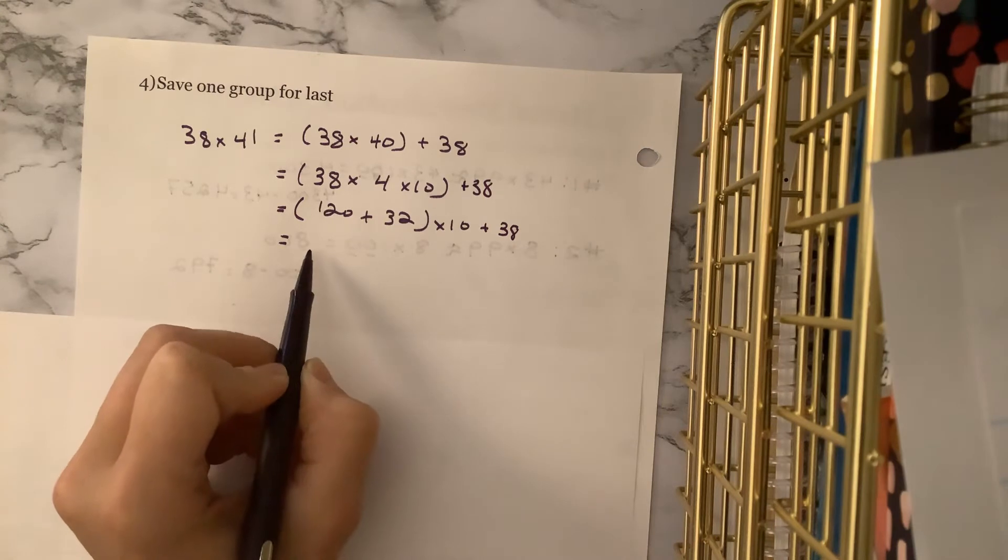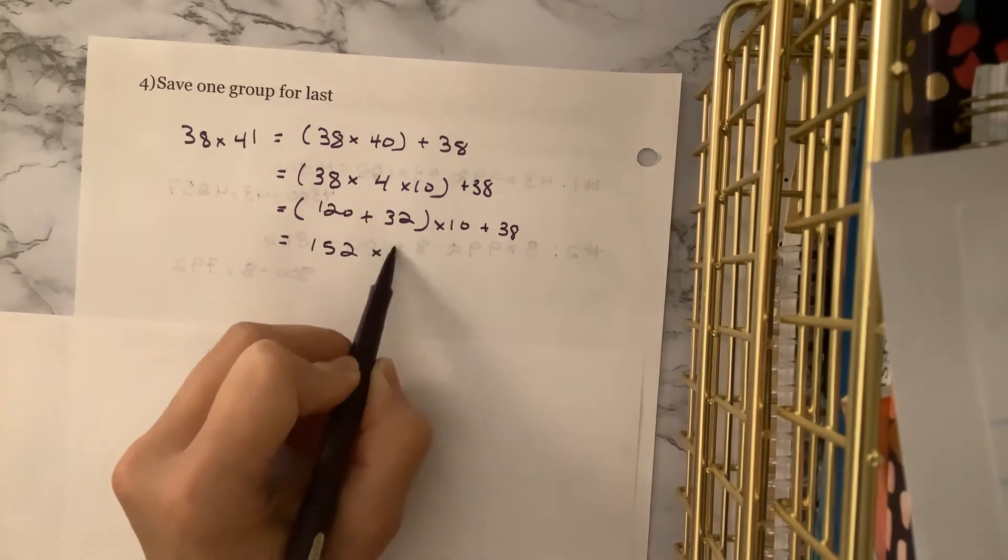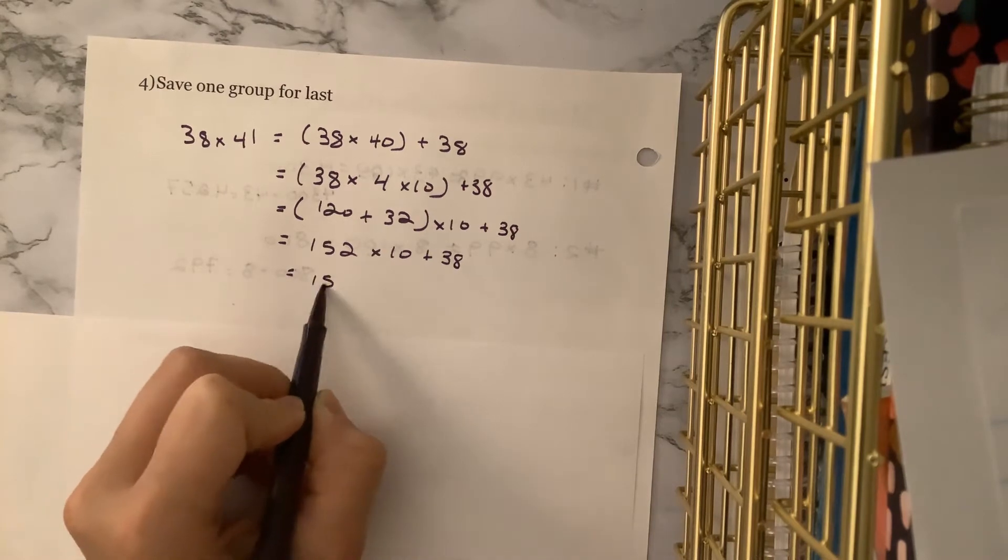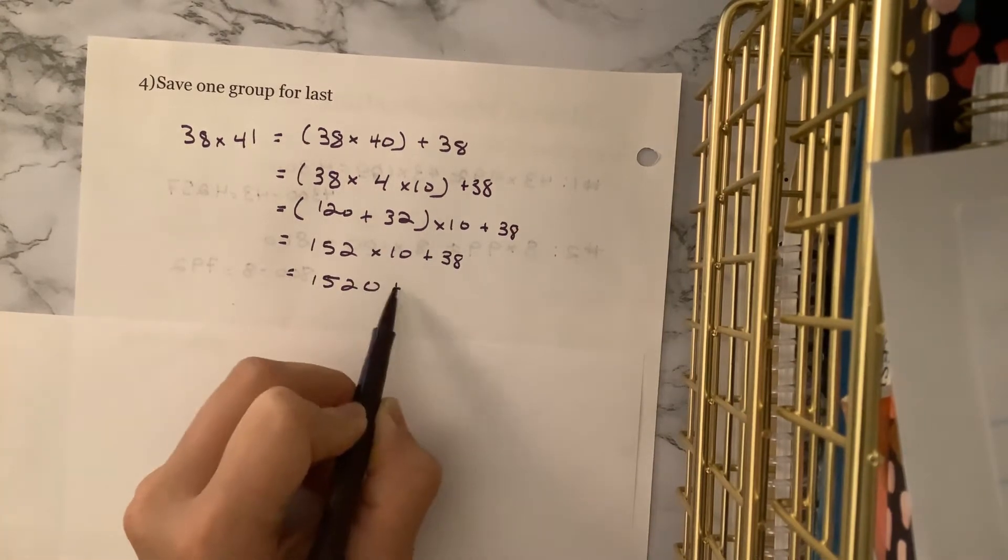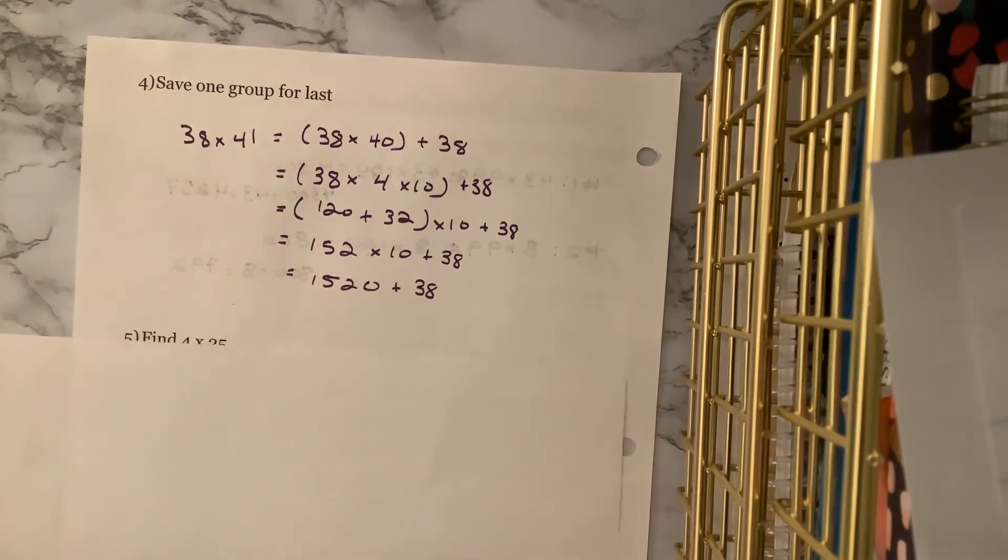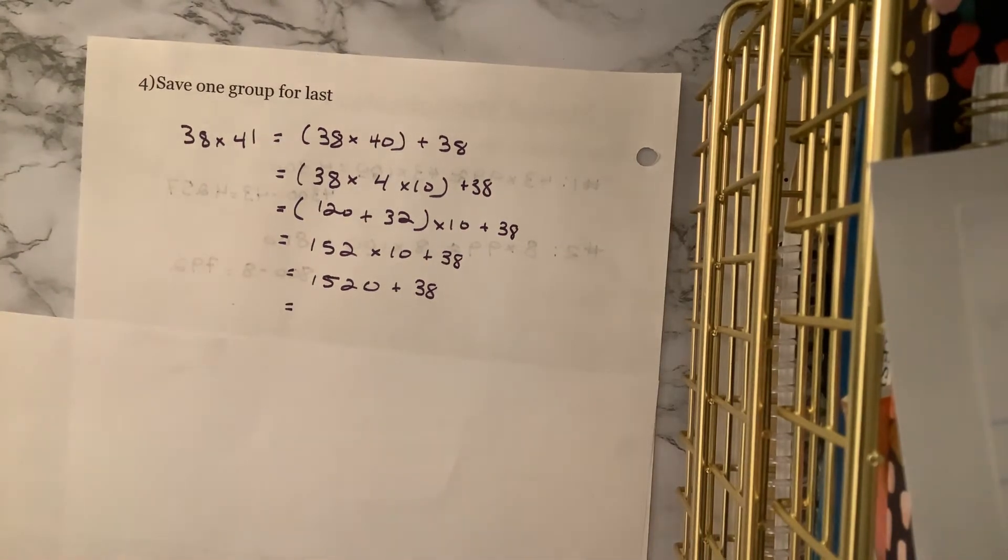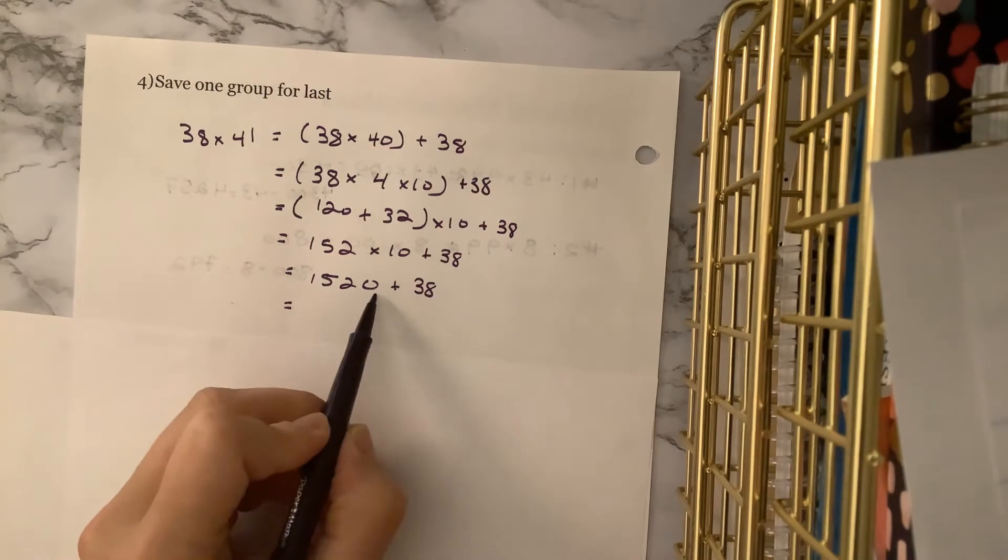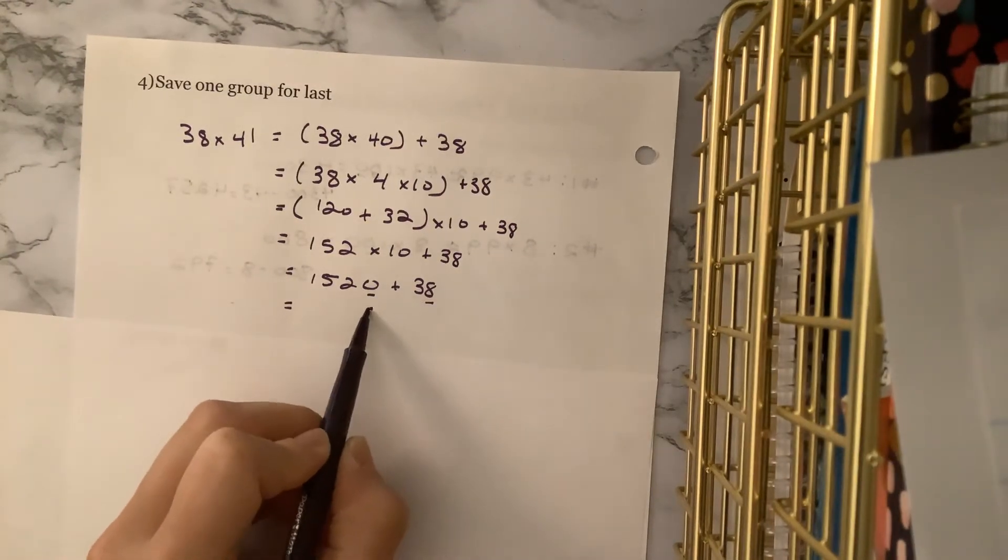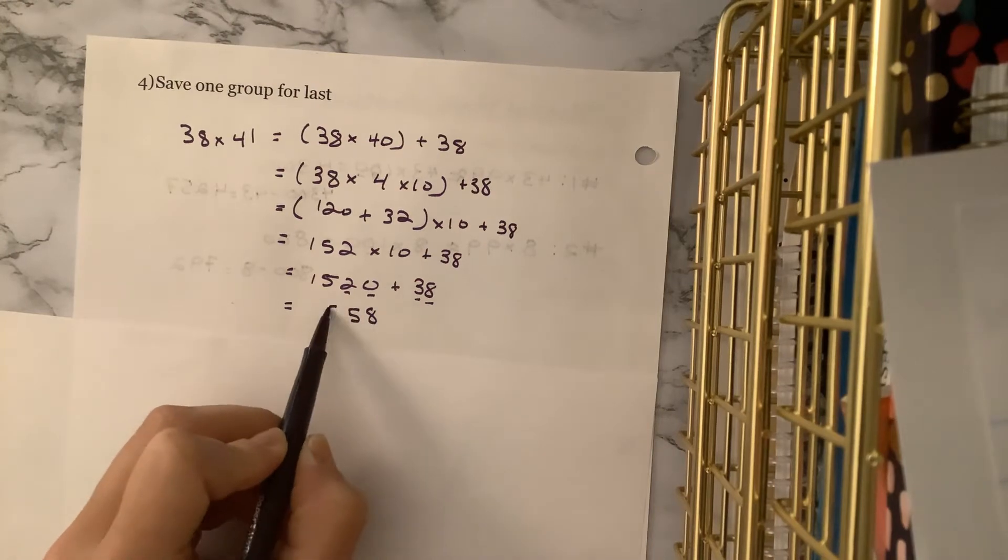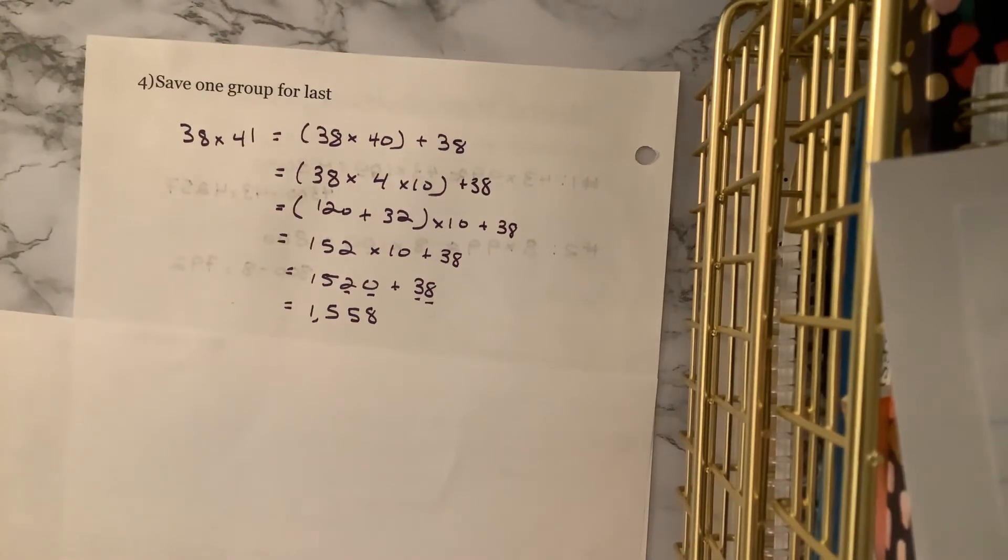So remember, we're not doing 38 times 4. We're going to do 30 times 4, which is 120, plus 8 times 4, which is 32. Then we multiply by 10, and then we add our 38. 120 plus 32 is 152. Remember, when we're multiplying by 10, all we do is add a 0. And now we add 38, which actually we can add 38 in our heads too, right? Remember, if we're just going place value by place value. So our 1s, we add our 0 and our 8, which is 8. We add our 3 and our 2 tens, which is 5 tens.